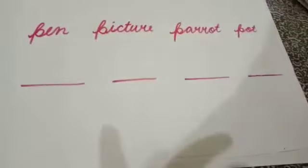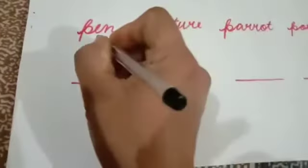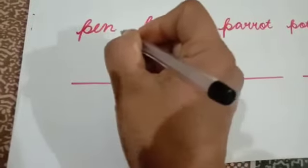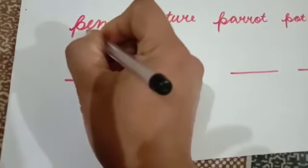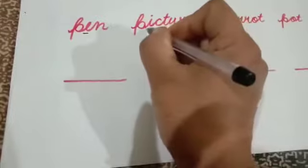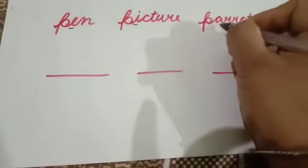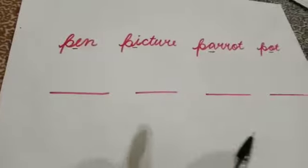Here is another list of the same kind. Here we also look at the second letter of the word. All the words are started with letter P. In the word pen, the second letter is E. In the word picture, the second letter is I. In the word parrot, the second letter is A. And in the word port, the second letter is O.